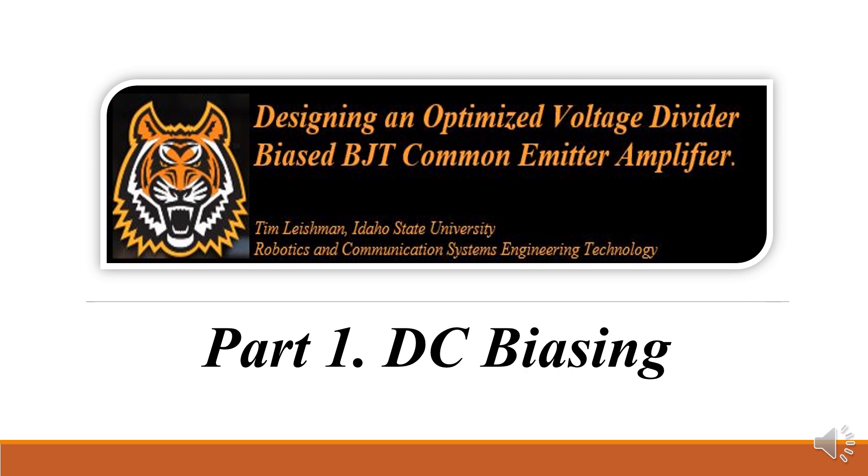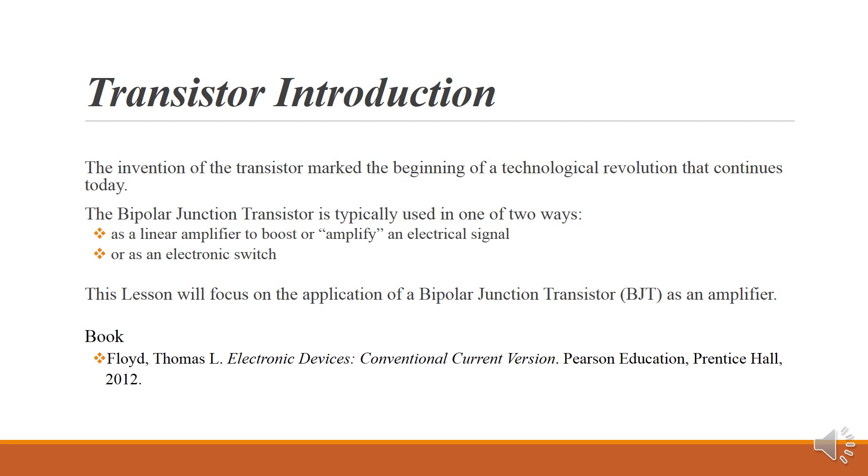Welcome to Part 1 DC Biasing of the Designing and Optimized Voltage Divider Biased BJT Common Emitter Amplifier. The invention of the transistor marked the beginning of a technological revolution that continues today. The bipolar junction transistor is typically used in one of two ways: either as a linear amplifier to boost or amplify an electrical signal, or as an electronic switch.